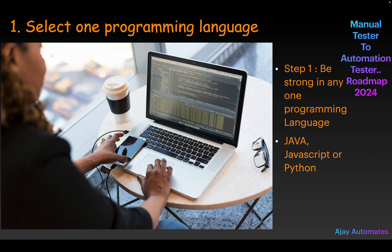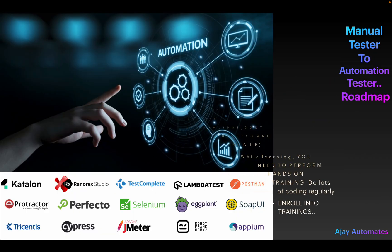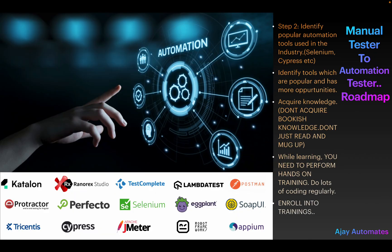The second step is you need to choose an automation tool. There are many automation tools in the market like Cypress, Selenium, QTP, LambdaTest, BrowserStack, and Protractor. Select tools which are open source because they are free to learn and you can download the corresponding jar files easily. Identify a popular open source automation tool like Selenium or Cypress, whichever you are comfortable with, and start learning that.